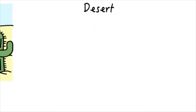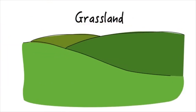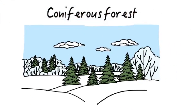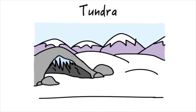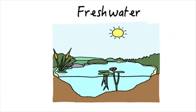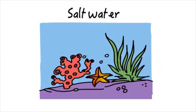Here are some examples of land ecosystems: desert, grassland, coniferous forest, rainforest, and tundra. Here are some examples of aquatic ecosystems: freshwater ecosystems and saltwater ecosystems.